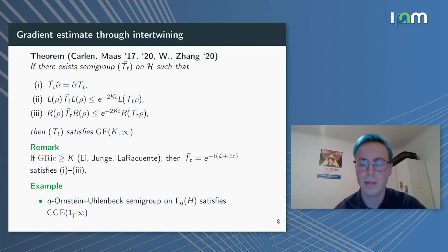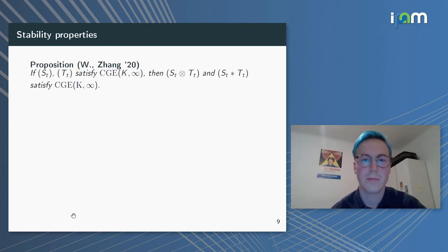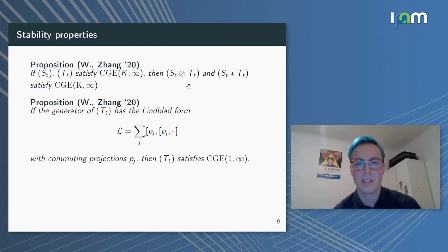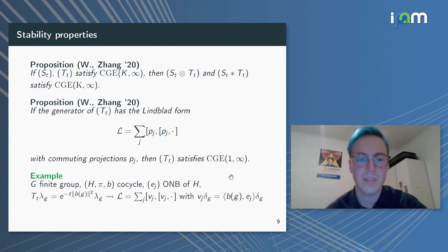But we can also go a little further. One more property, and the main reason why we introduced this CGE instead of GE only, is that it's tensor stable. Now if I have two semigroups that satisfy CGE(k,∞), then so does the tensor product and their free product. Another basic result—here we go back to finite-dimensional systems—is if the generator T_t has Lindblad form as double commutators where the P_j are now commuting projections, then T_t also satisfies CGE(1,∞).